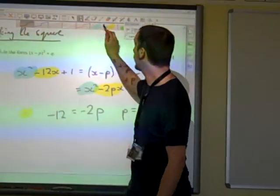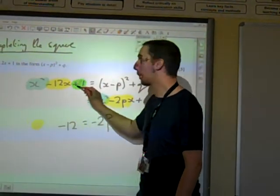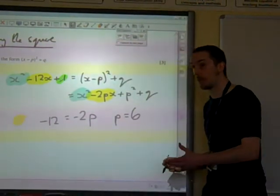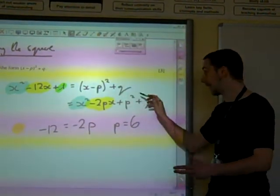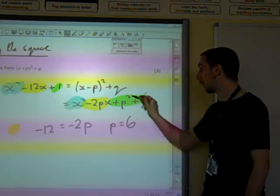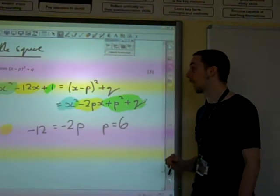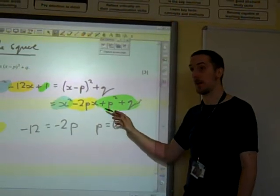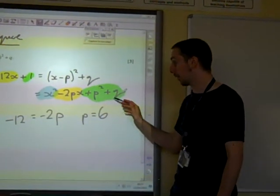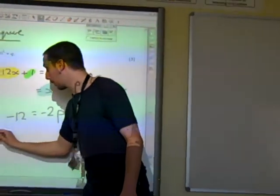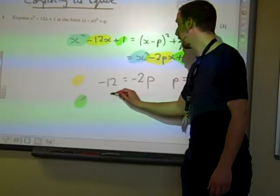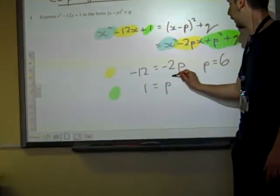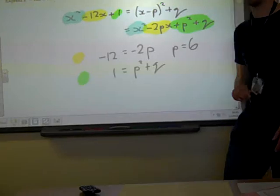And then if we look at the numbers, we've got +1 there. And this is a common mistake. You've got to remember the number bit isn't just the q at the end. It's all the bit that doesn't involve x. So +1 over there is going to be the same as +p² + q.